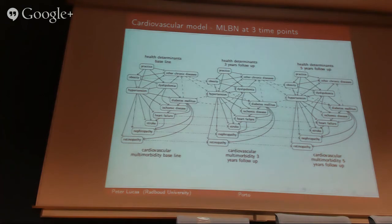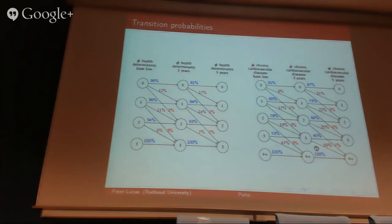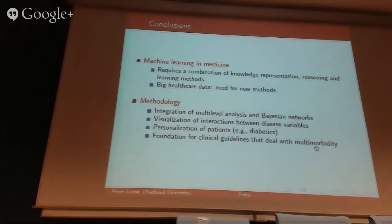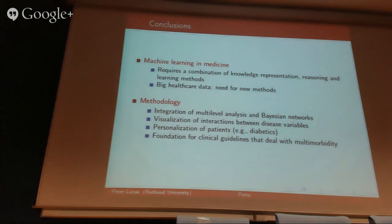You start with your model and it gives you already quite a lot of information — information which is also relevant from a clinical point of view. What we try to do in the end is to see whether we can use that sort of information in designing clinical guidelines. As a research unit, we're also involved in research dealing with the design of clinical guidelines, and this information could be used to design guidelines for multi-morbidity.